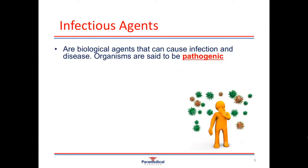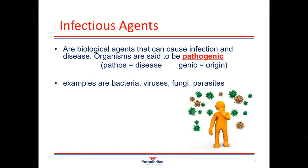Infectious agents are biological agents that can cause infection and disease. Organisms are said to be pathogenic, meaning they are considered to be the origin of most diseases. The different types of infectious agents are bacteria, viruses, fungi, and parasites.